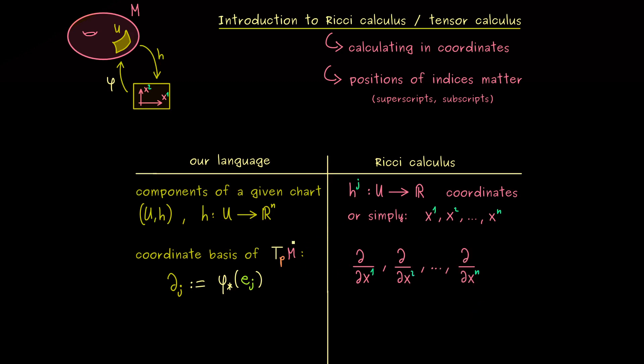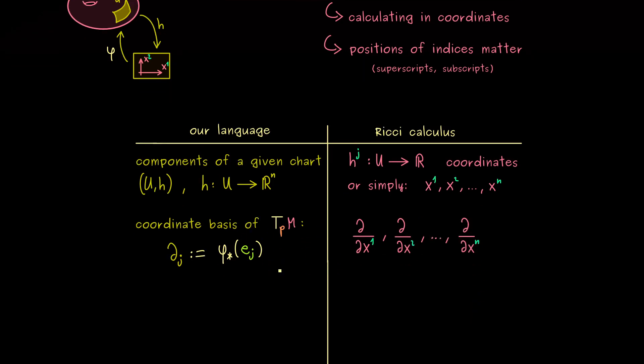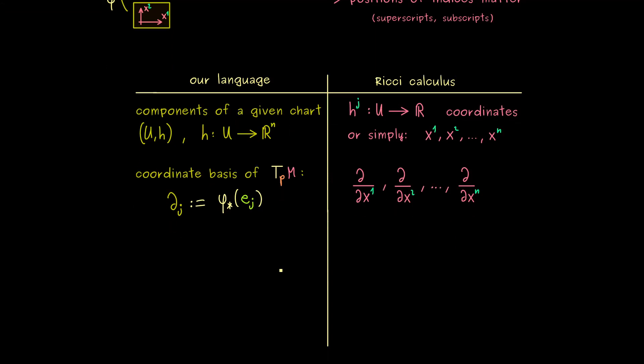Okay, now by having a basis of T_p M we can just write down a general tangent vector. Indeed we already know how this works in an abstract way. On the left hand side we just have an equivalence class of a curve γ. However, since we have a basis of the vector space we can simply span this tangent vector by using the basis vectors.